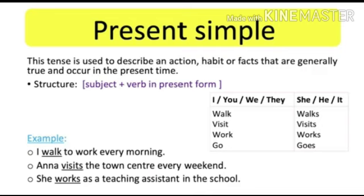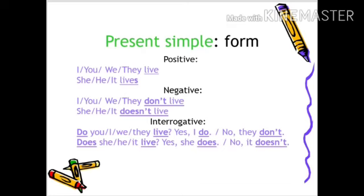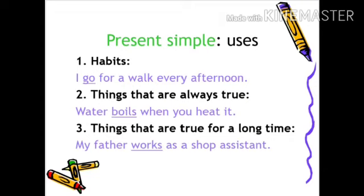If we are using the subject I, you, we, or they, the verb doesn't end with S. However, with he, she, or it, the verb ends with S. Simple present tense can be expressed in the following forms: positive, negative, and interrogative. Structure of positive sentence: subject plus present form of the verb. Structure of negative sentence: subject plus don't or doesn't plus present form of the verb. Structure of interrogative sentence: do or does plus subject plus present form of the verb.